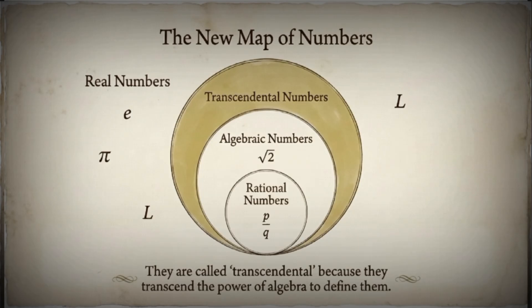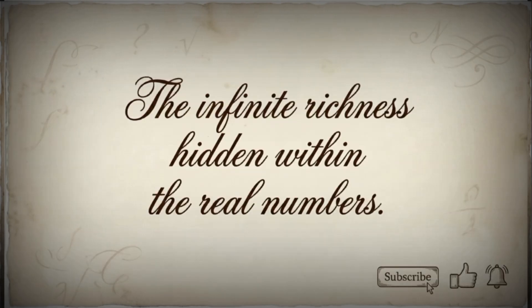From Hippasus' discovery of square root of 2 in ancient Greece, to Euler introducing the concept in 1744, to Liouville proving their existence in 1844, and finally to the proofs that e and pi are transcendental in the 1870s and 80s.